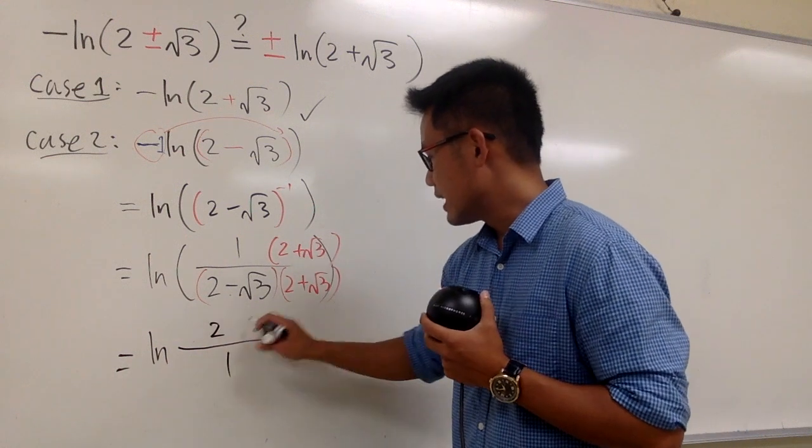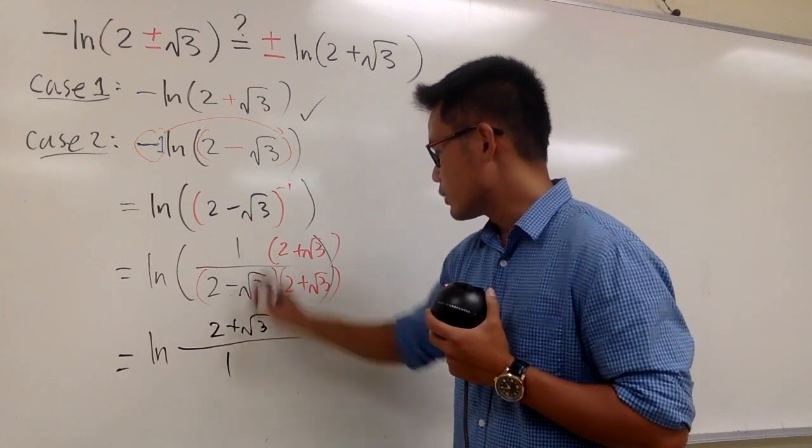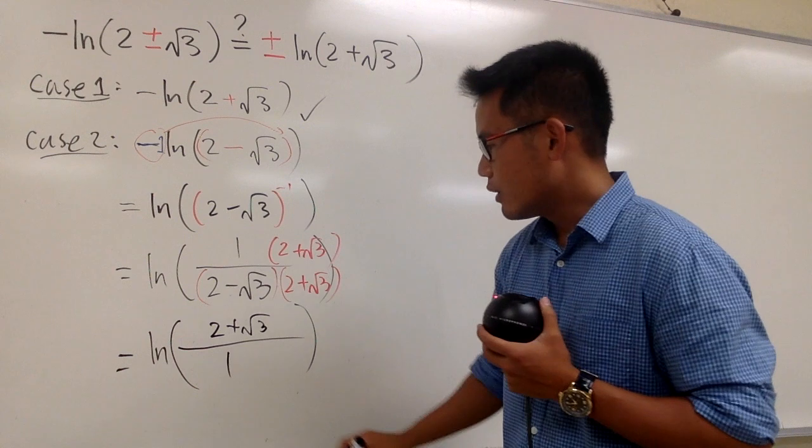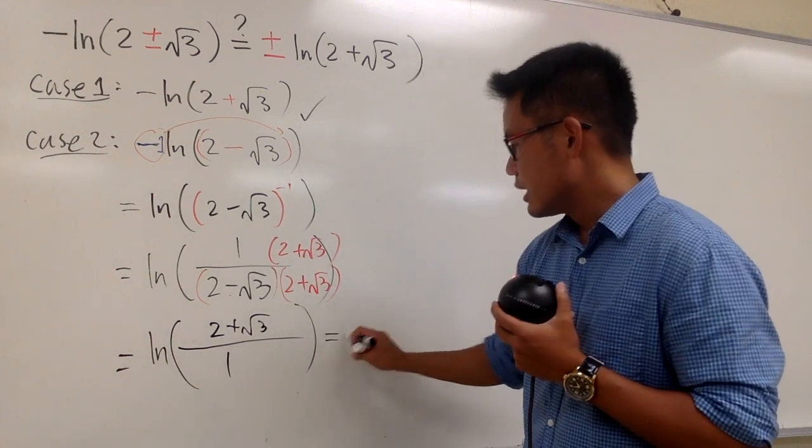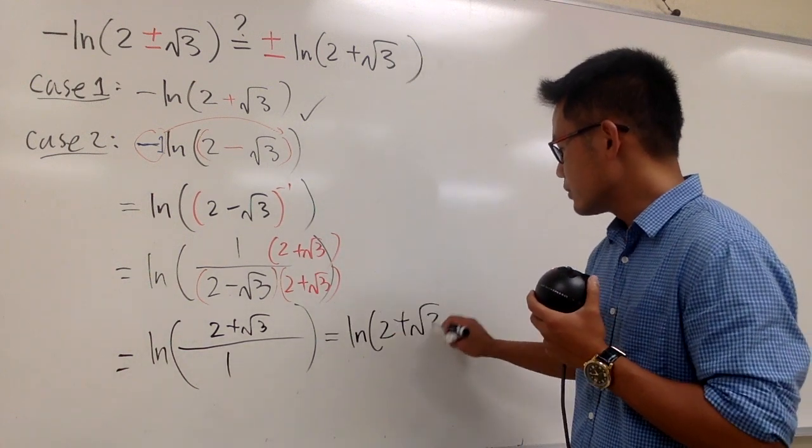And then on the top, we have 2 plus square root of 3 times 1, which is just this. And now, of course, you see that this is just ln parentheses 2 plus square root of 3.